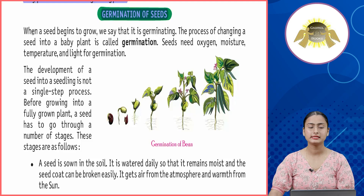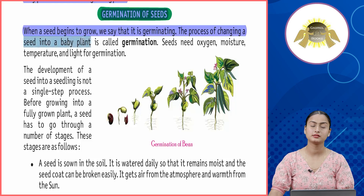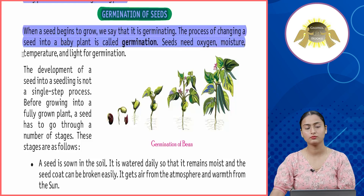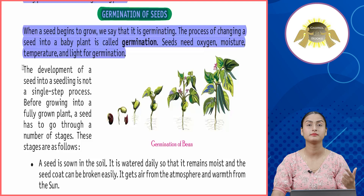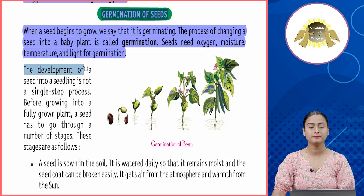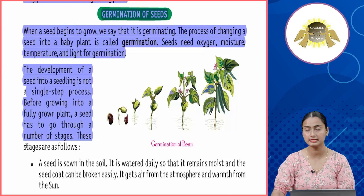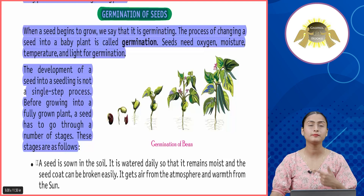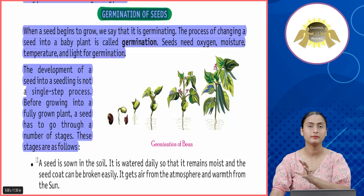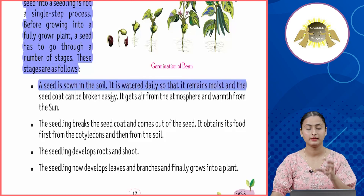Germination of seeds: when a seed begins to grow, we say it is germinating. The process of changing a seed into a baby plant is called germination. Seeds need oxygen, moisture, temperature, and light for germination. The development of a seed into a seedling is not a single-step process — before growing into a fully grown plant, a seed has to go through a number of stages.